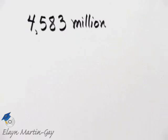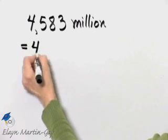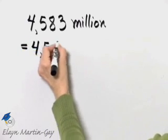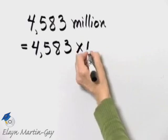So we want to write this number using standard notation. You can do it in one of two ways. You can certainly just write down 4,583 and multiply it by 1 million.